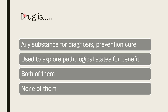Next question: a drug is any substance used for diagnosis, prevention, or cure of disease; or any substance used to explore pathological states for the benefit of the patient, from which one can determine treatment course or therapy. The correct answer is both of them.